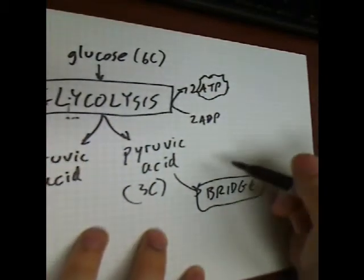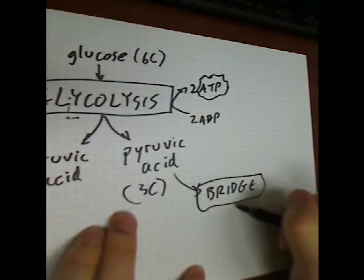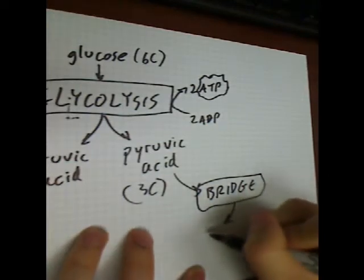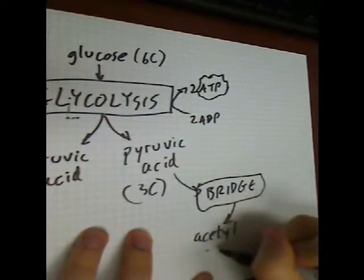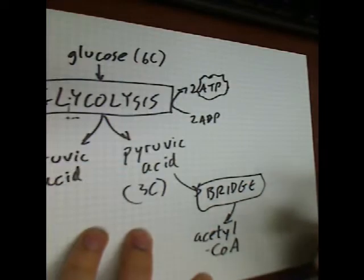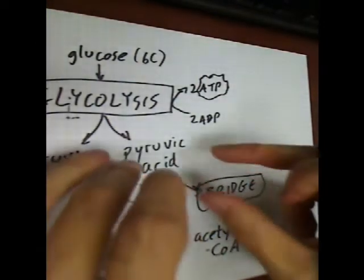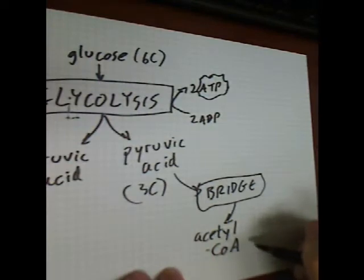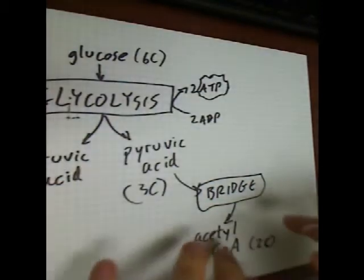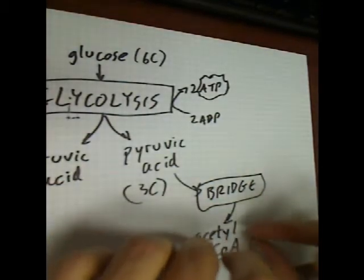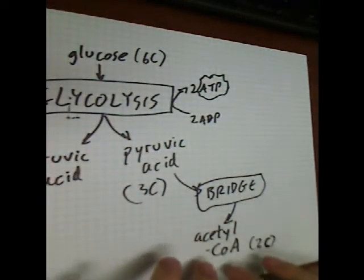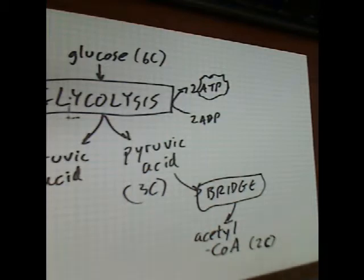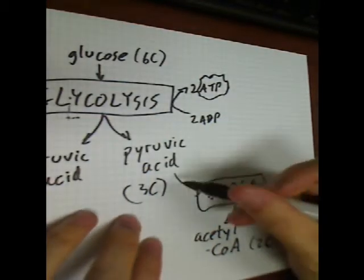In the bridge reaction, we take this three-carbon pyruvic acid, and what's going to come out of the bridge reaction is something called acetyl-CoA. Acetyl-CoA has two carbons — not counting the CoA part — but the acetate part has two carbons. So something with three carbons comes in, and something with two carbons comes out.